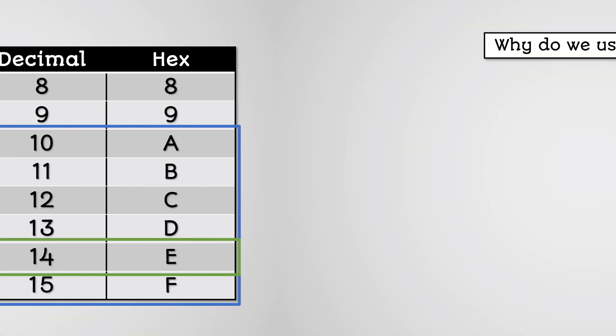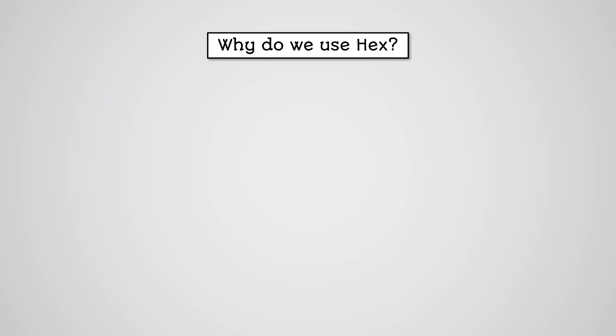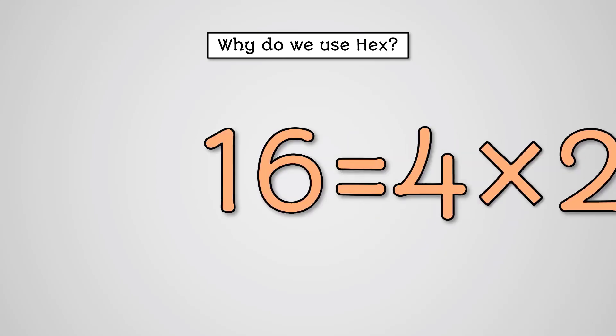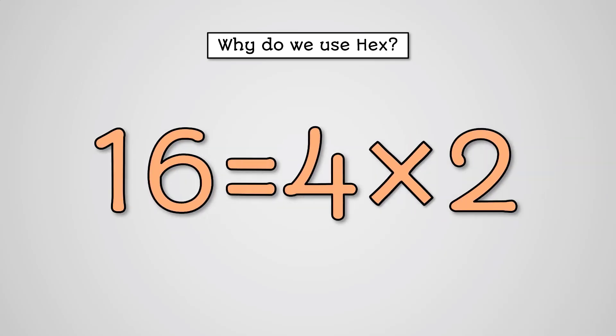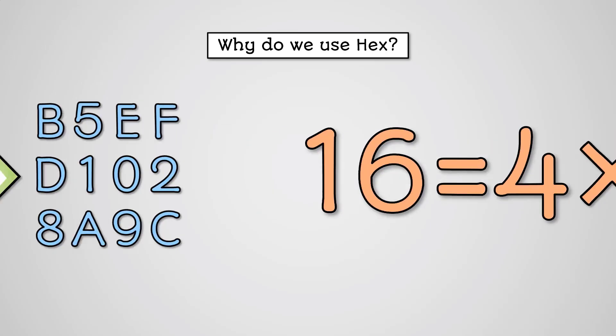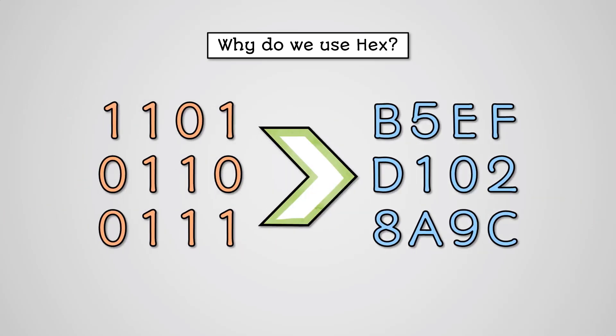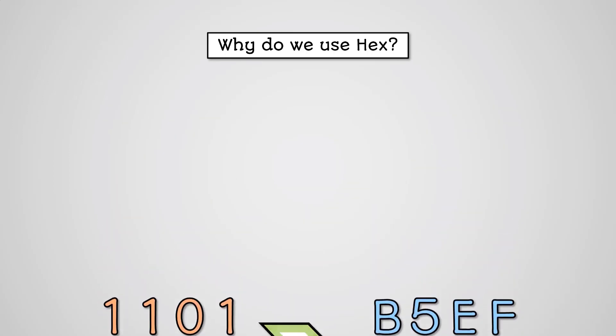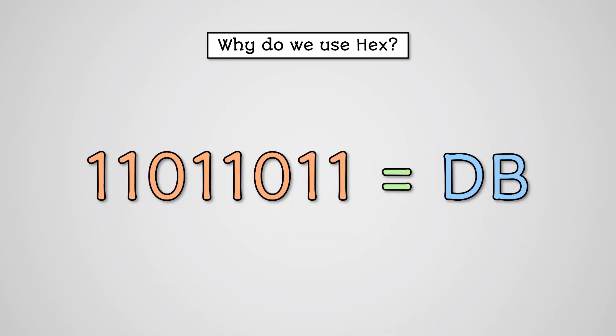Why do we use hex? Well, it's a multiple of 2, so it is relatively easy to move between binary and hex, and can store these values in less space, as an 8-digit binary number would take just 2 hex digits.